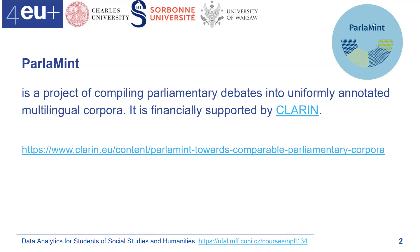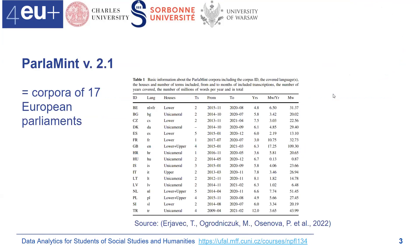The third goal is making the data available and accessible using popular systems. So far the ParlaMint corpora have been published in three versions. Version 1.0 contained the initial four corpora — Croatian, Bulgarian, Polish, and Slovenian — with the main intention to serve as a model for what needed to be done by the 13 new partners.